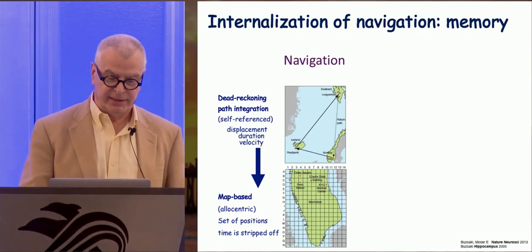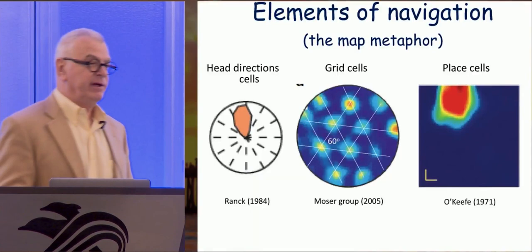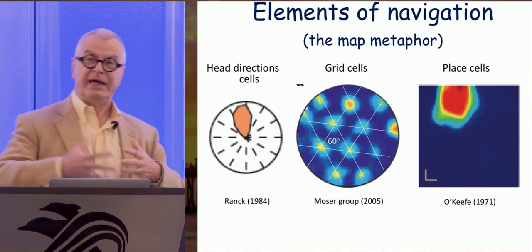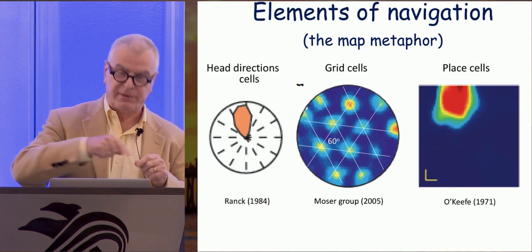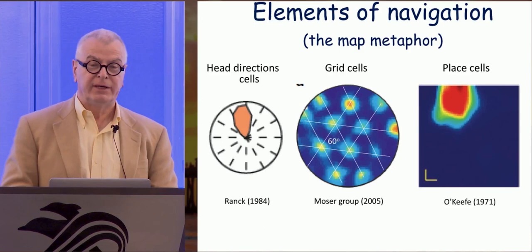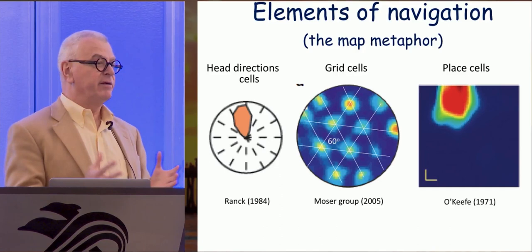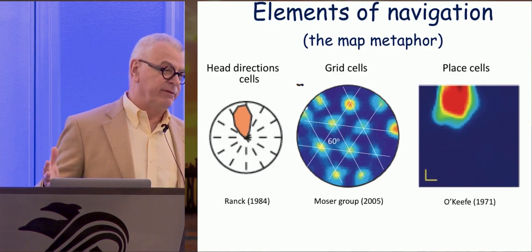When you visit New York City and emerge from the subway with a map, you need to do several things. First, rotate the map so the orientation is correct. Second, relate the environment with the grid system. Third, locate yourself. Fourth, figure out the scale of the map, whether it relates to a five-minute walk or five-hour cab drive.